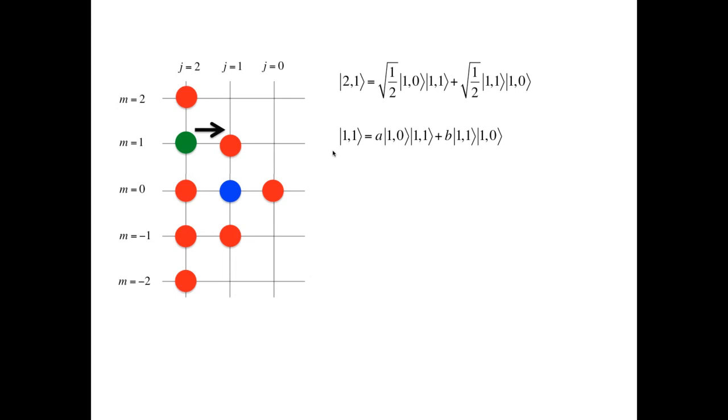We have an expression with two unknowns, A and B, which are, in fact, Clebsch-Gordan coefficients for these states, but I wrote them as A B for simplicity. In order to find A and B, we use the condition that state |1,1⟩ must be normalized, and also that state |1,1⟩ must be orthogonal to state |2,1⟩.